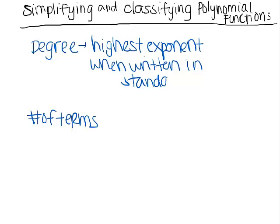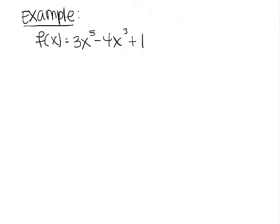We're going to take a look at some examples of how we would name some polynomial functions. Take a look at this one. We know that this function is in standard form because we have all these different terms and the degrees are going in descending order. The highest degree that I can see is 5.